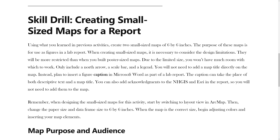Only include a north arrow, a scale bar, and a legend. You will not need to add a map title directly on the map. Instead, plan to insert a figure caption in Microsoft Word as part of a lab report. The caption can take the place of both descriptive text and a map title. You can also add acknowledgments to the NHGIS and ESRI in the report, so you will not need to add them to the map.